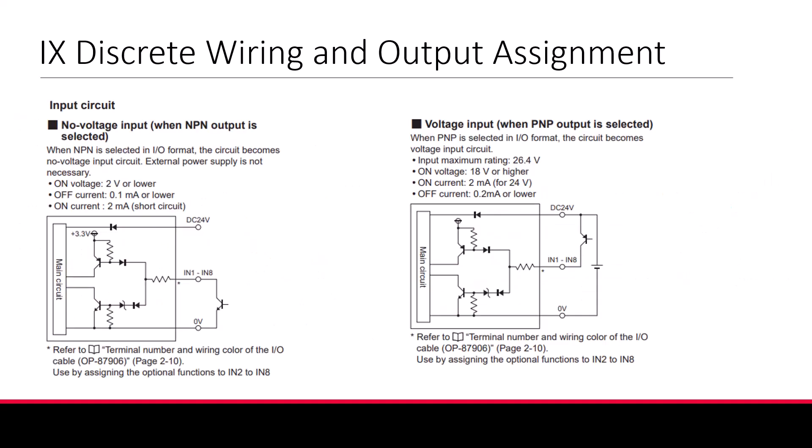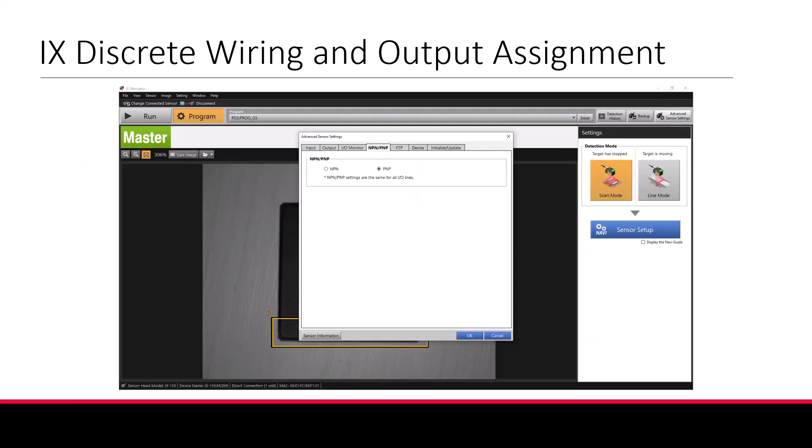Now let's get to the actual wiring. We'll start by wiring one input to trigger the sensor. First let's look at our wiring diagram. You'll see the way we wire our input will depend on if we select PNP or NPN for the sensor's polarity. This is done through the software in advanced settings under the NPN/PNP tab.